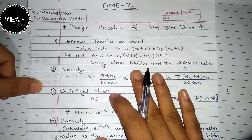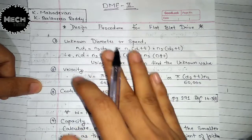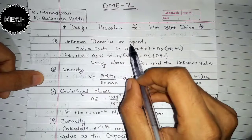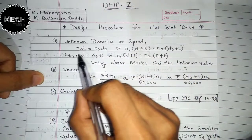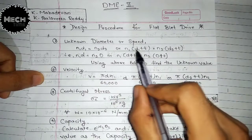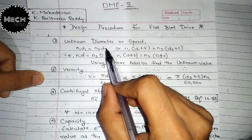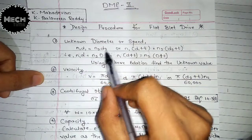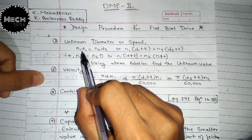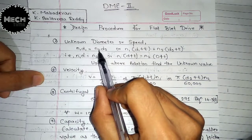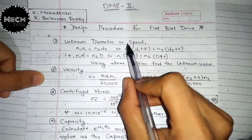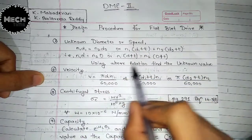The design procedure for a flat belt drive has a total of eight steps. If all eight steps are done, the whole problem is solved. The first step is to find the unknown diameter or speed. Using the speed-diameter relation, if d1 and n1 are given along with d2 but n2 is unknown, you can find n2. If n1, d1, and n2 are given but d2 is unknown, you can find d2.